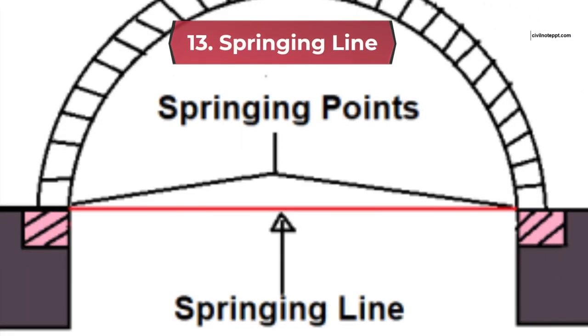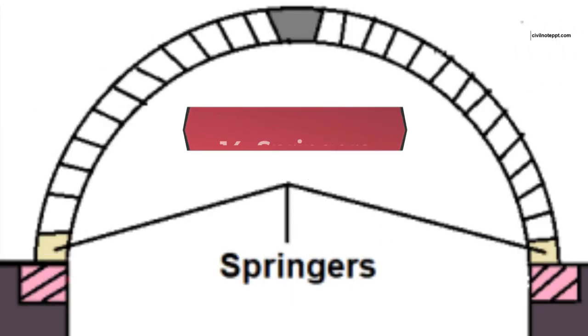13. Springing line. The springing line is nothing but the imaginary horizontal line joining the two springing points. 14. Springers. It is the first voussoir, or beginning voussoir, at the springing level on either side of the arch.